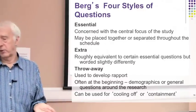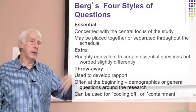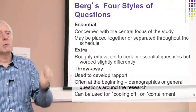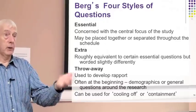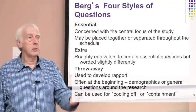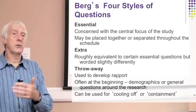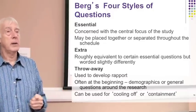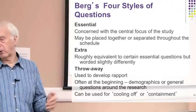Berg has what he calls essential questions — concerned with the central focus of the study, the things you really must find out about. You can place them all at the beginning or sprinkle them throughout. There may also be extra questions generated by the discussion — related to the essential issues but coming out as extra detail or spin from your conversation, things you haven't thought of beforehand that become obvious once you've got a reply from the respondent.